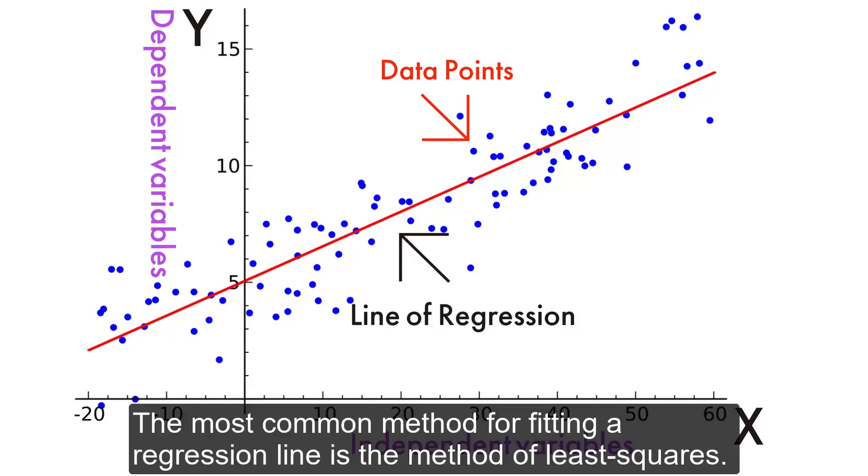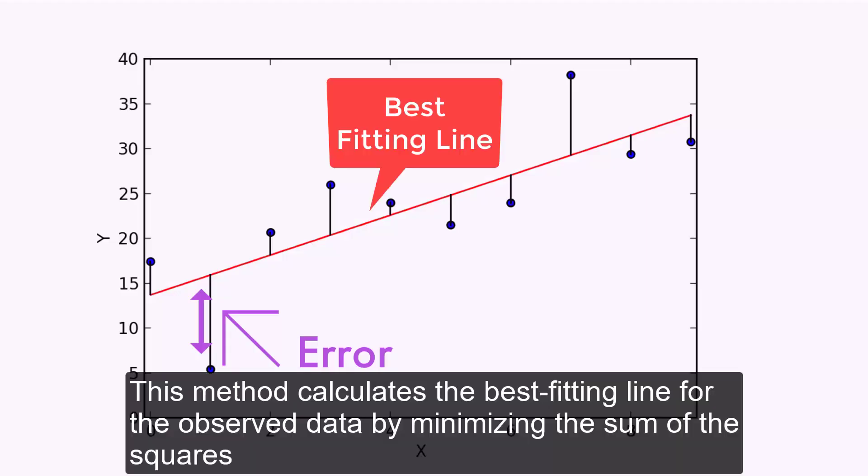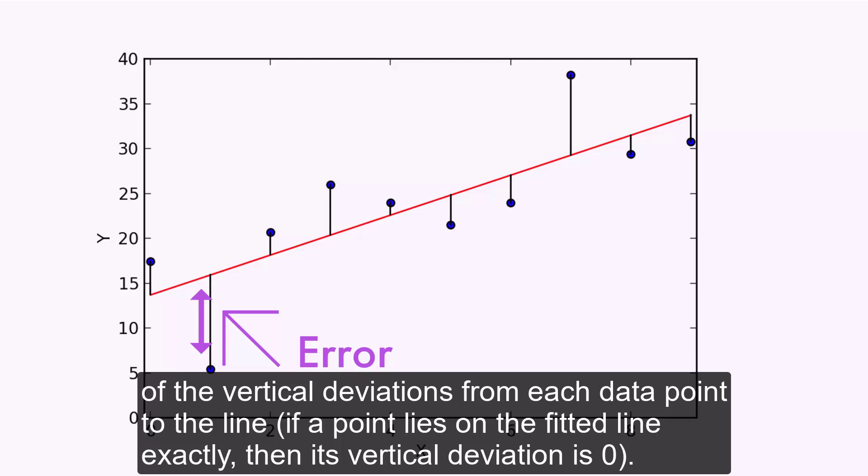The most common method for fitting a regression line is the method of least squares. This method calculates the best-fitting line for the observed data by minimizing the sum of the squares of the vertical deviations from each data point to the line. If a point lies on the fitted line exactly, then its vertical deviation is zero.